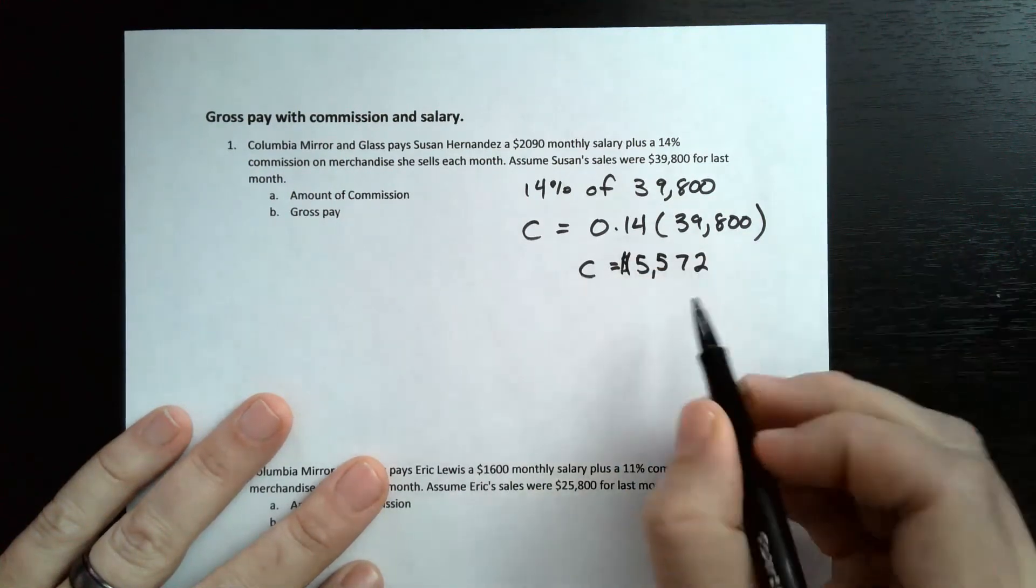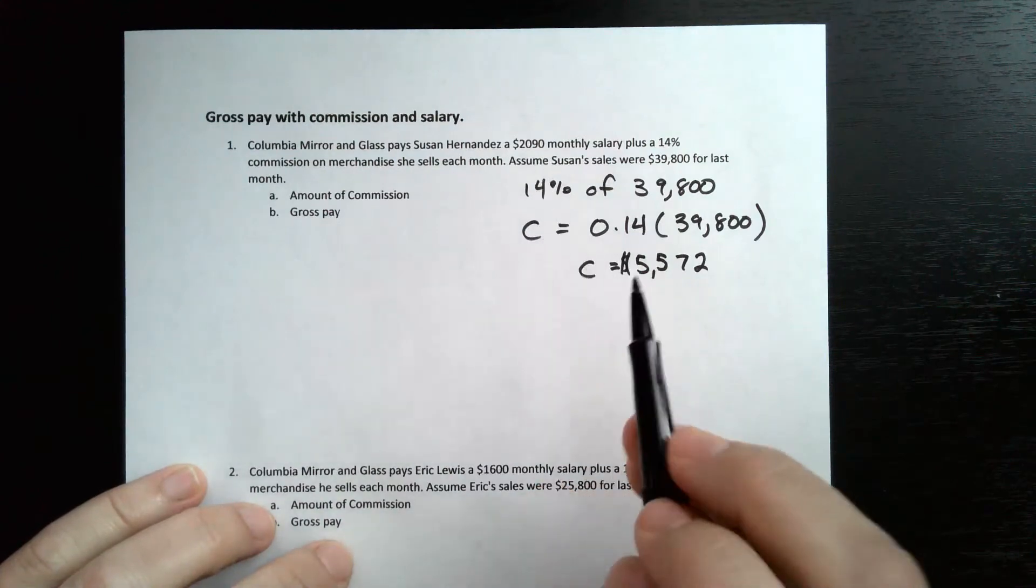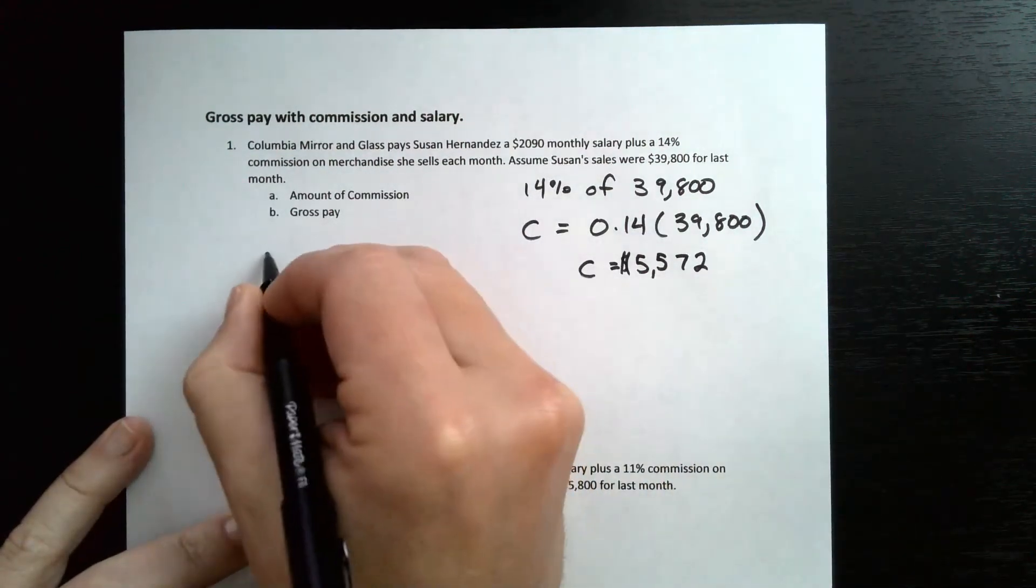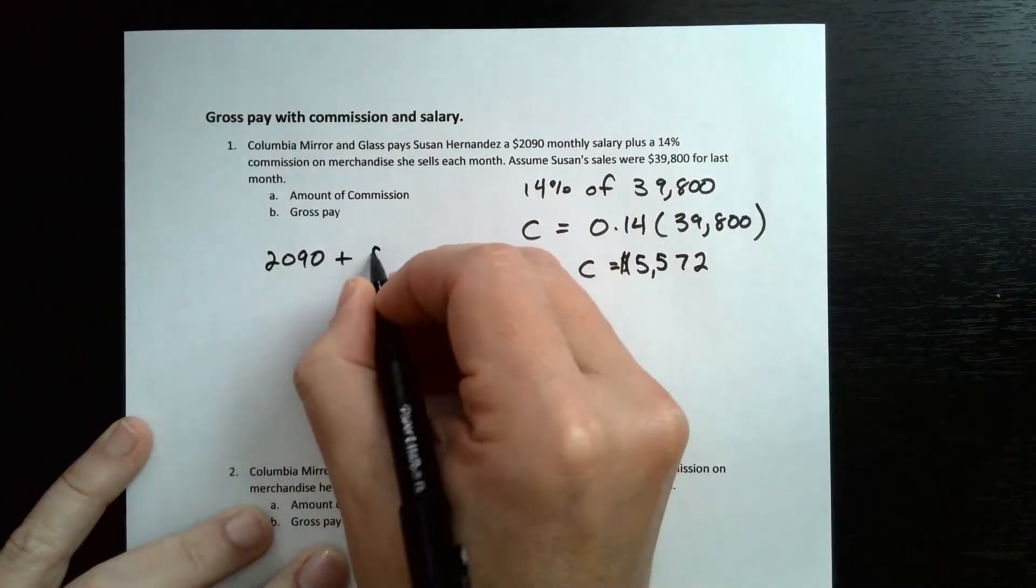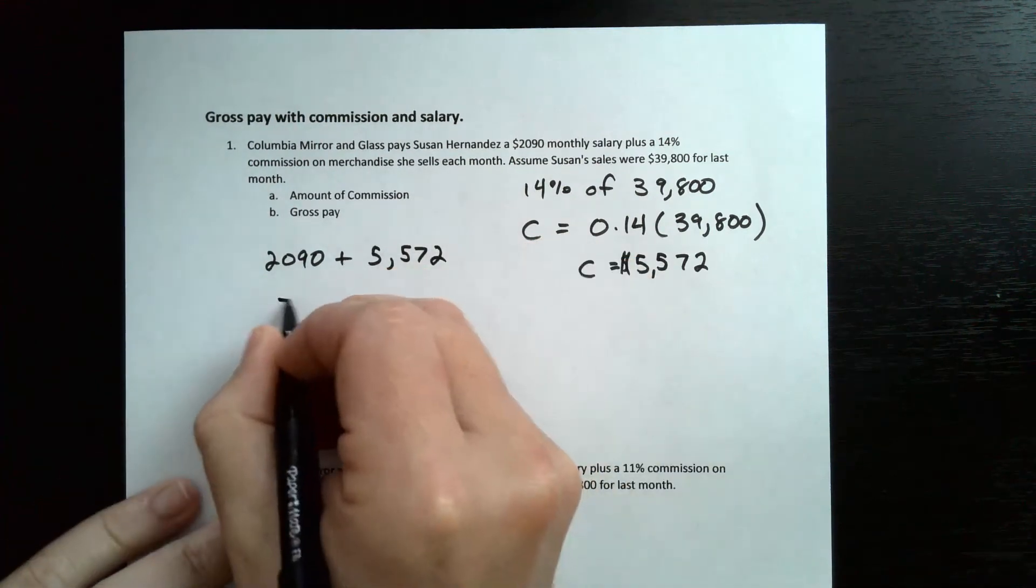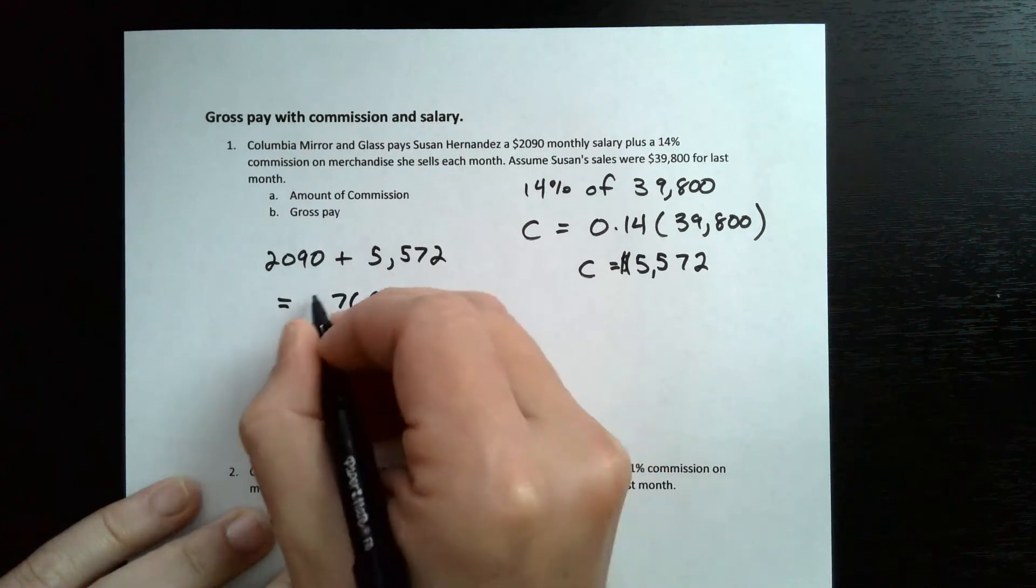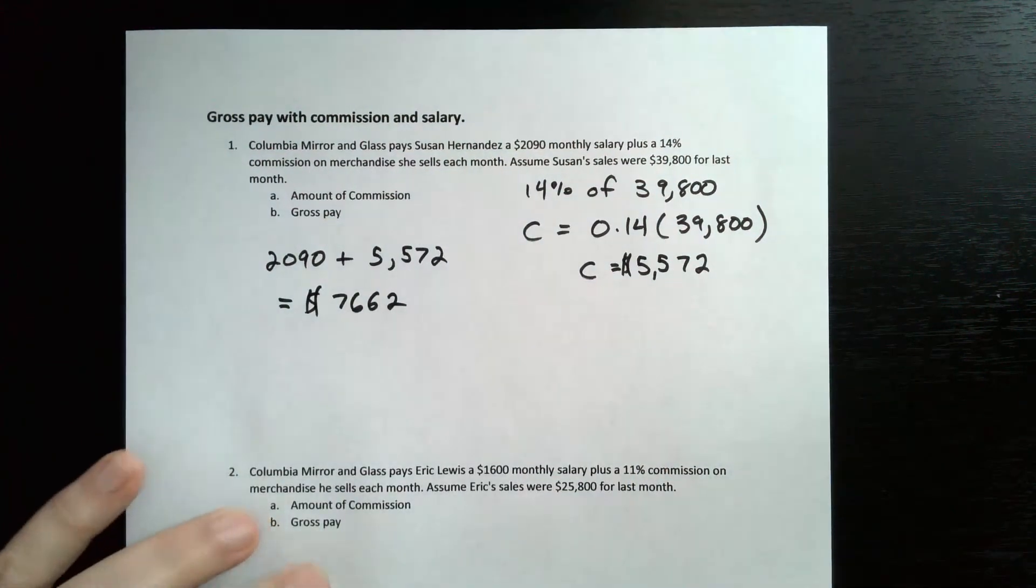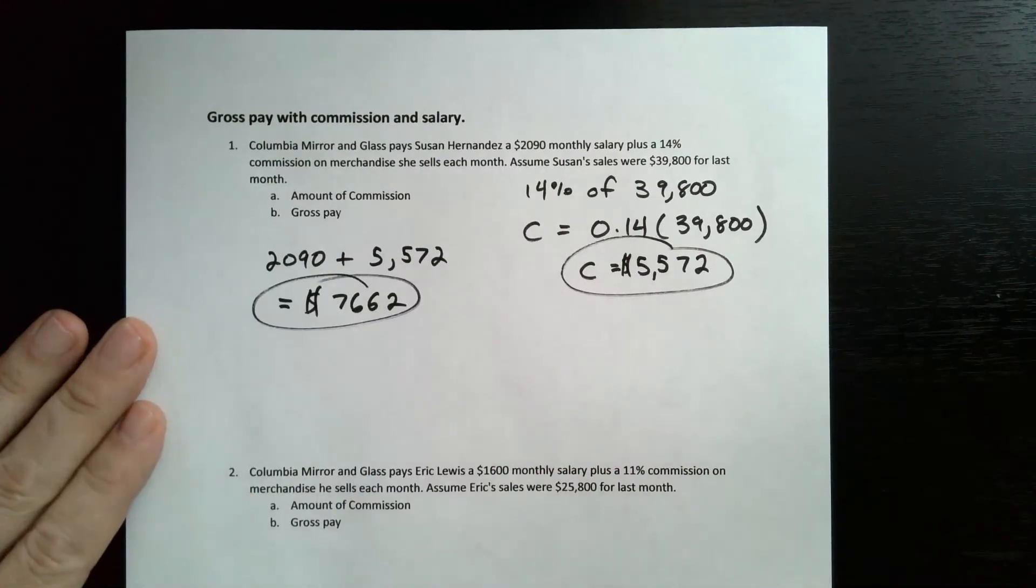She made this much money in commission, and this was her monthly salary. So this is the answer to A. The gross pay is $2,090 plus $5,572, which equals $7,662. And that's the gross pay. So this is A, this is B.